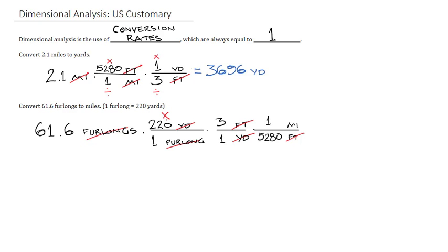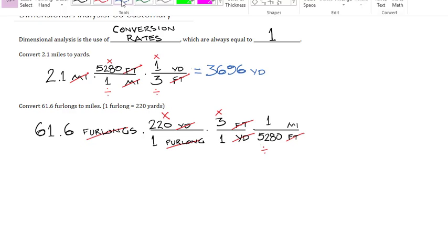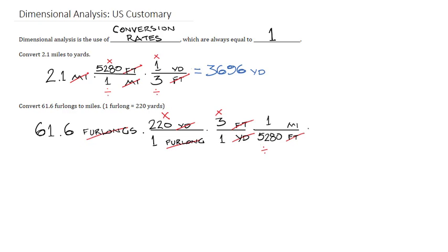And again I'm going to take 61.6, multiply by 220, multiply by 3, and divide by 5280. I get that 61.6 furlongs is exactly 7.7 miles.